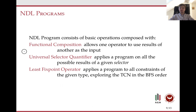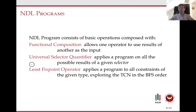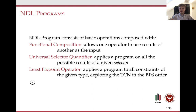At the moment, there are three fundamental ways to compose operations in NDL. The first is functional composition — we allow the result of one operator to be used as an argument to the next. The second is universal selector quantifiers — we can quantify over results of a selector and apply an NDL program to all the results. The third is the list fixed-point operator, which applies a program to all constraints of a given type in BFS order, starting from a given variable and exploring the whole graph.